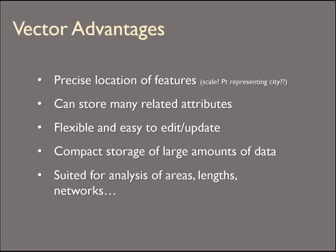To summarize vector advantages: it gives you a precise location of a feature, though you need to be careful — if a point represents a city, don't report the distance between two cities to the nearest centimeter. You can store many related attributes, and the data is very flexible and easy to edit or update — easy to move, add points, or manipulate attributes. Vector data is also compact with relatively small file sizes. Because of its coordinate-based structure, it's well suited for mapping locations, defining specific areas, and mapping networks like pipelines, streams, electric lines, and road centerlines.